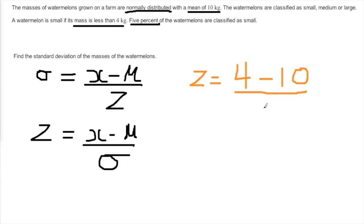Since we are looking at the watermelons that are small, we can put 4 for the x because a watermelon is small if its mass is less than 4kg. For the mean, it is 10kg as given, so we can just put 10 for the mean.